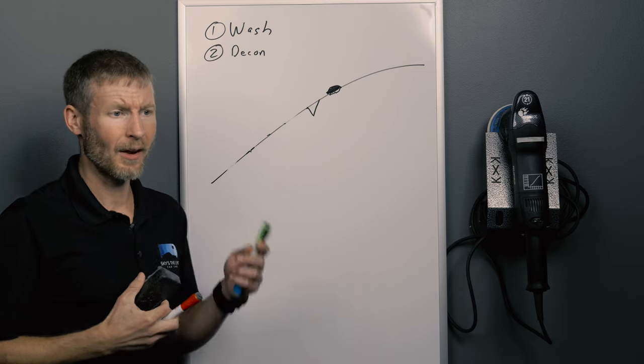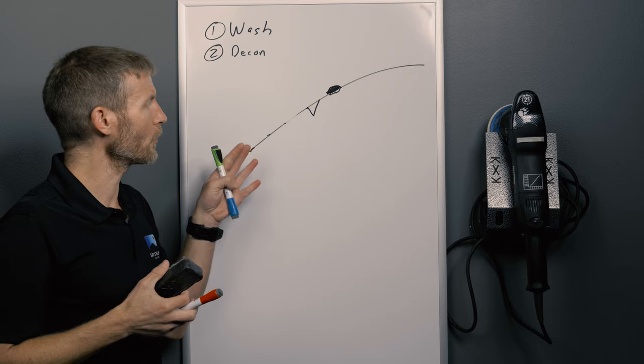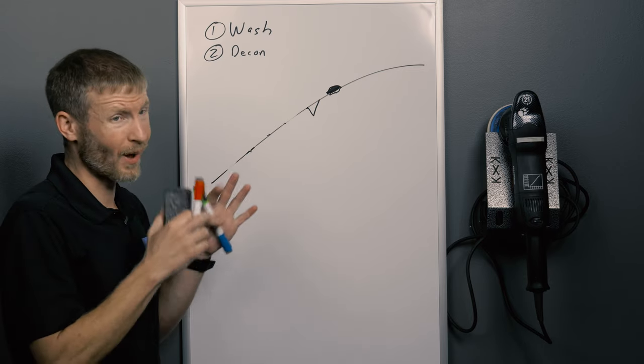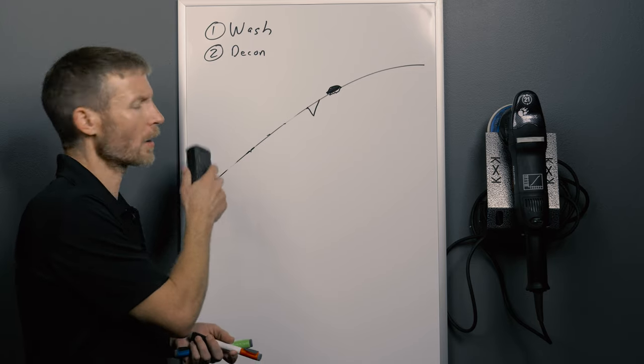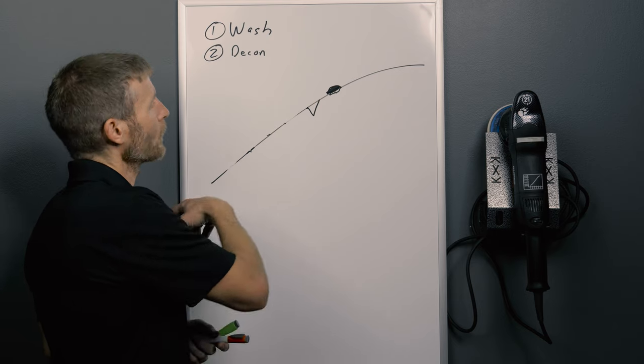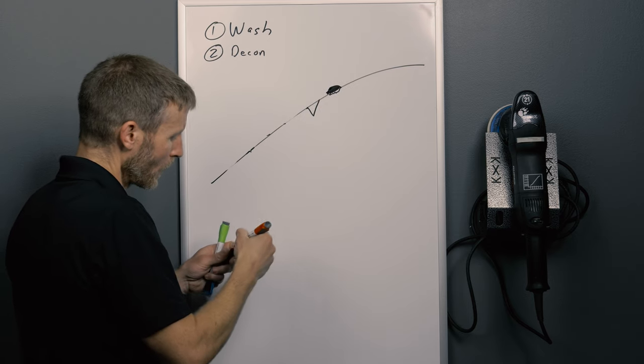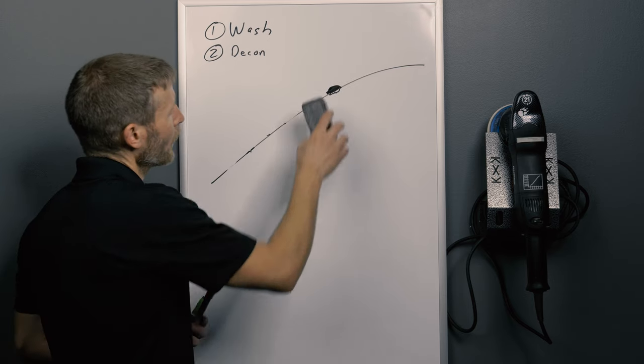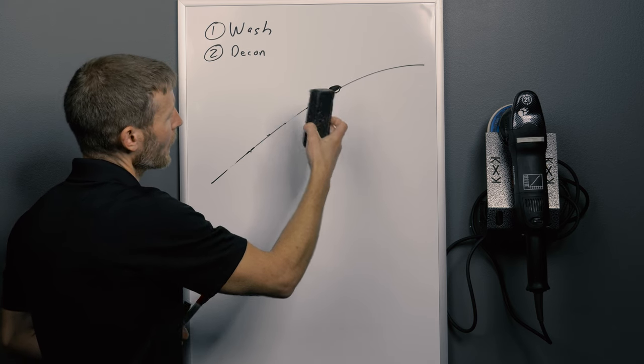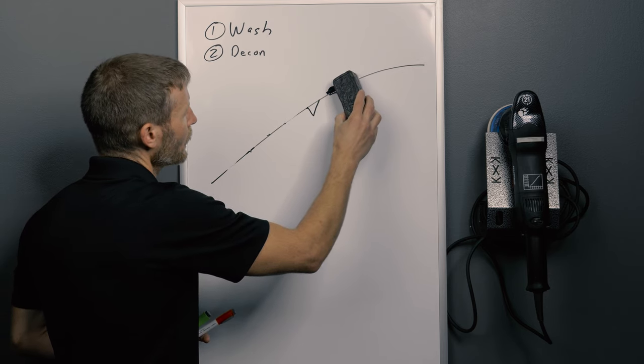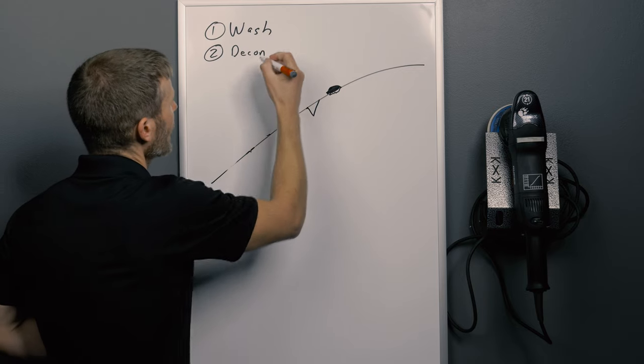In some cases you could have somebody might have sprayed paint or something near and some paint had landed on there, that's a different situation. Or concrete, there's all kinds of different things that can get on your paint. But these are the most common situations, is tar, dirt, iron, stuff like that. So we've washed it, we've decontaminated it, and that includes, actually let's talk about this one as well.